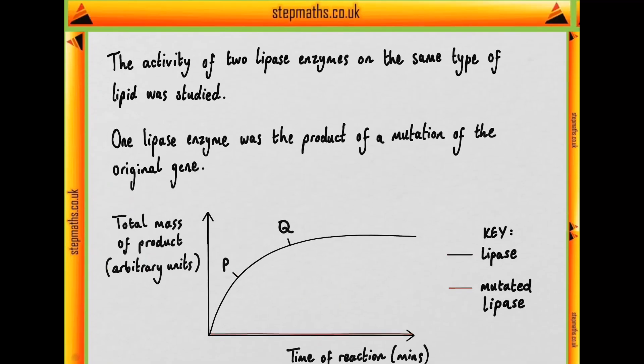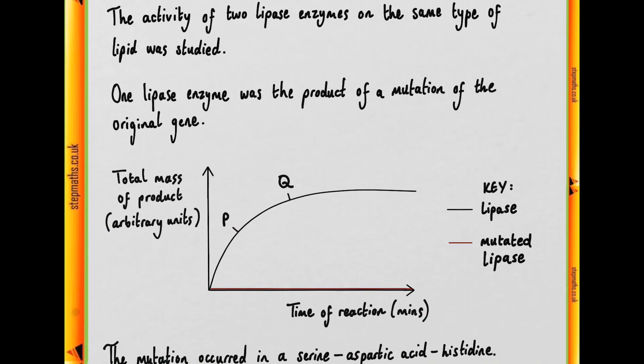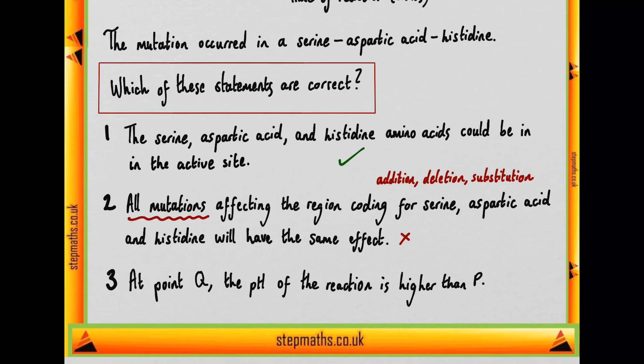Now since we're talking about a lipid which is being broken down into its constituent parts, that would be fatty acid and glycerol. The fatty acid levels would increase as the lipid breaks down, and therefore the pH would be lower.